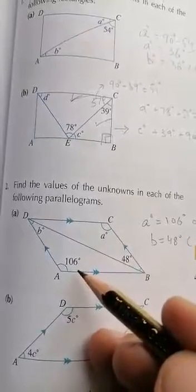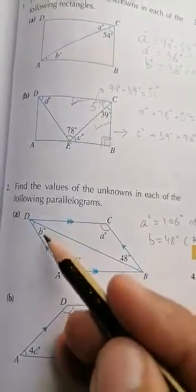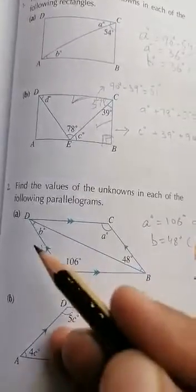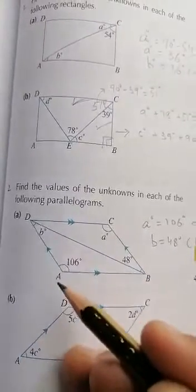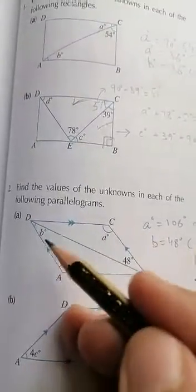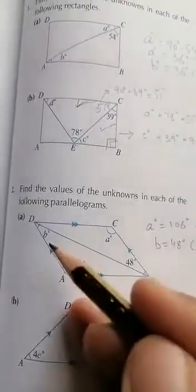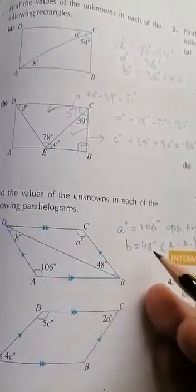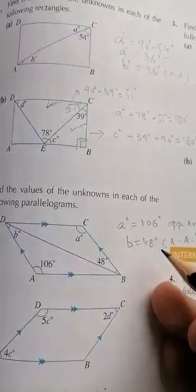If you look at angle B and angle 48, you can see this is a transversal intersecting line AD and line BC. So angle B and 48 form a pair of alternate angles. Therefore, B is equal to 48 degrees because these two angles are alternate angles.